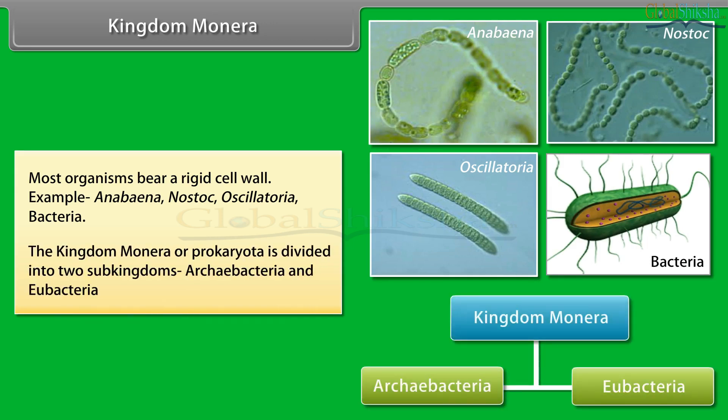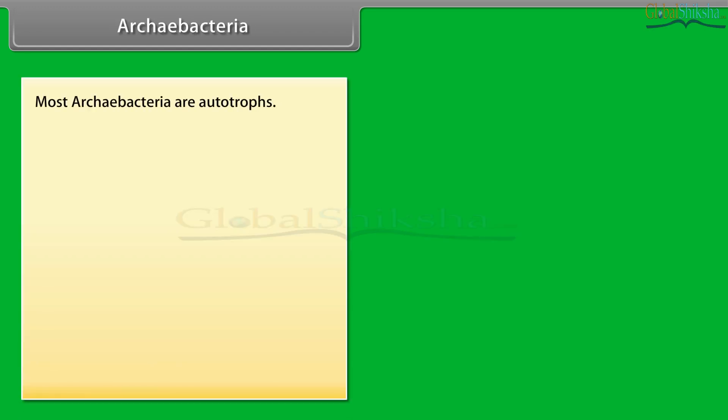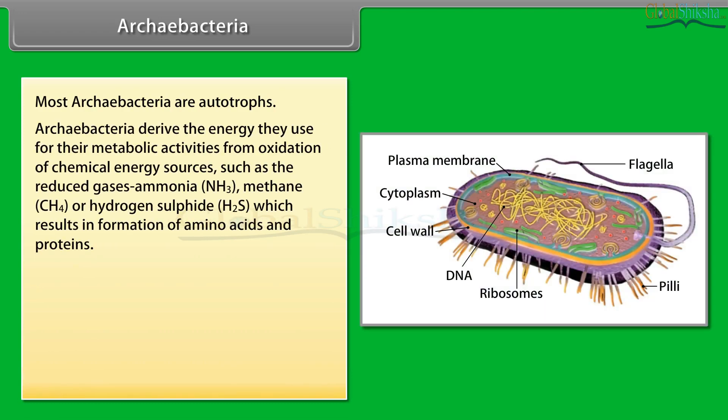The kingdom Monera, or Prokaryota, is divided into two sub-kingdoms: Archaebacteria and Eubacteria. Most Archaebacteria are chemotrophs that derive energy from oxidation of chemical energy sources such as reduced gaseous ammonia (NH3), methane (CH4), or hydrogen sulfide (H2S), which results in formation of amino acids and proteins.